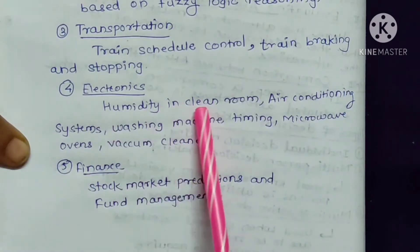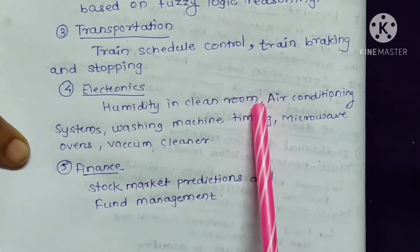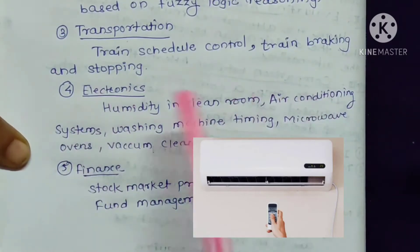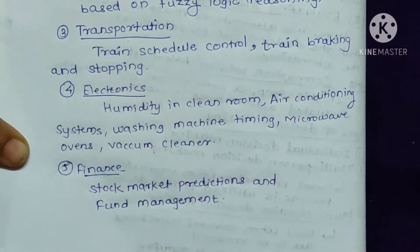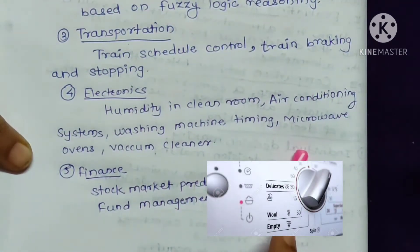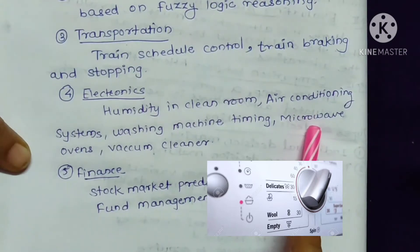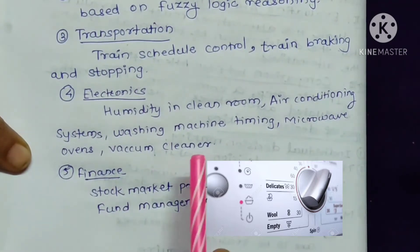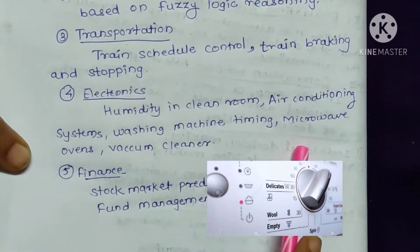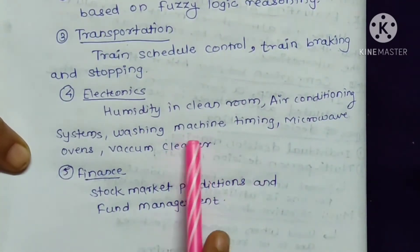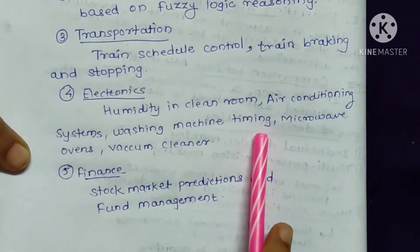Fuzzy logic can be used to analyze the humidity in a clean room. In air conditioning systems, temperature adjustments can be done based on fuzzy logic, using linguistic characteristics like high, low, and medium. Water levels can also be adjusted based on fuzzy logic using terms like cold, hot, warm, and very hot.